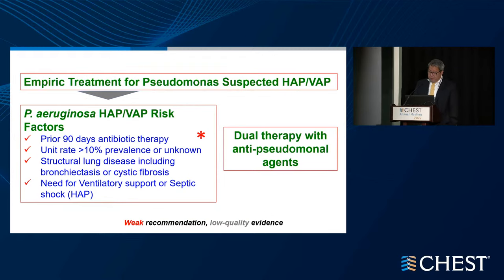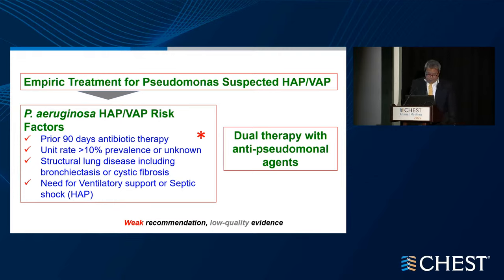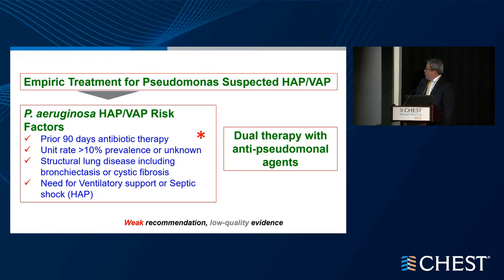Empiric treatment for pseudomonal pneumonia has a similar list of risk factors, including 90-day antibiotic use and lower threshold for unit rates of resistance. For pseudomonal infection, it is important to consider patients who have structural lung diseases like bronchiectasis and cystic fibrosis. Although a weak recommendation, dual initial therapy with anti-pseudomonal agents is recommended.